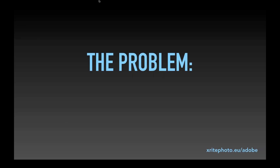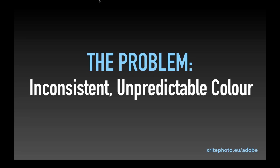So let's take a look at the main problem: inconsistent, unpredictable color. Photography has a lot of moving parts — working with the camera, getting files into your computer, editing, choosing the best ones, processing pictures, and then some type of output. Without putting a few systems in place and following consistent procedures, your color will be inconsistent and unpredictable, meaning you'll get a lot of surprises — and normally those are not nice surprises.